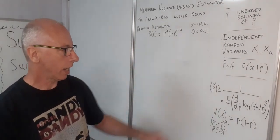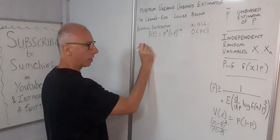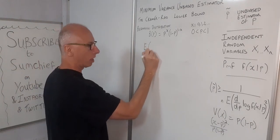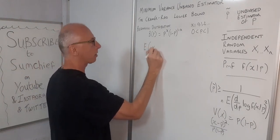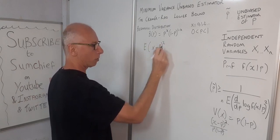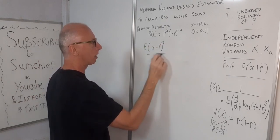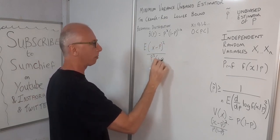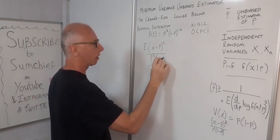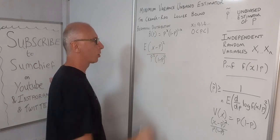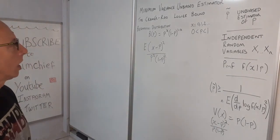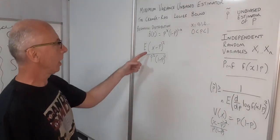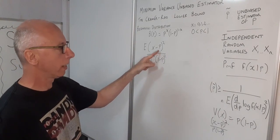Now we take the expectation of X minus P squared over P squared times 1 minus P all squared. So we need E of X minus P squared.